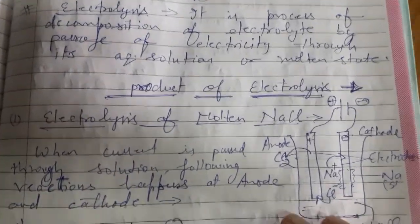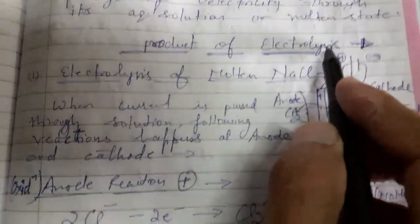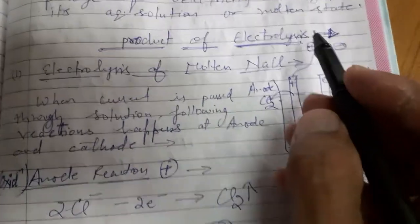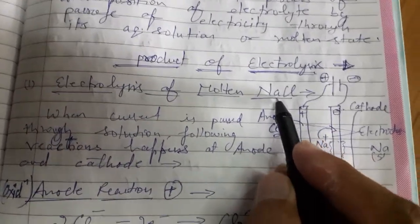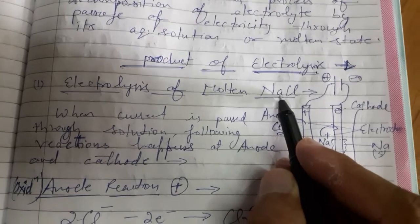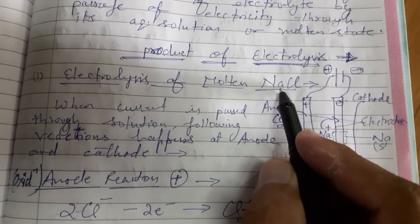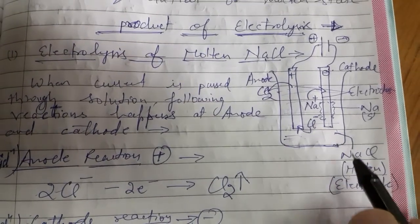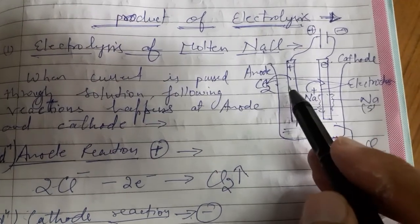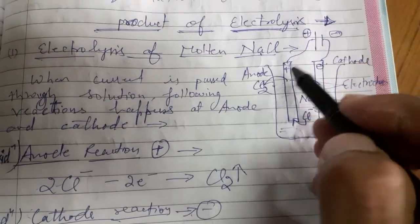Now we come to some examples of electrolysis of various electrolytes, under the heading of products of electrolysis. Number one, we will start with the electrolysis of molten sodium chloride. Molten means liquid state. The apparatus is a container filled with molten NaCl fitted with two electrodes — anode and cathode — connected to the terminals of a battery.